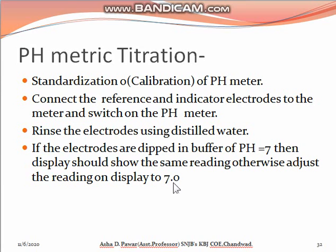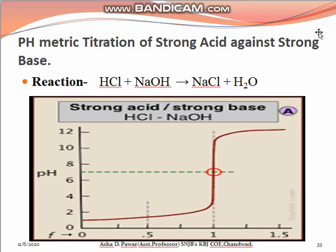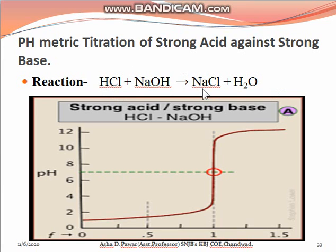Once we standardize the pH meter, we do not disturb the standardized knob and temperature knob. The second part of the titration is the titration between the strong acid and strong base. Replace the buffer solution with HCl solution. Fill the burette with a known concentration of NaOH and dip both the glass and calomel electrodes in the HCl solution. At the initial stage, HCl is a strong acid with a very high amount of H+ ions, and therefore the pH observed is very low, near about 1 or 1.5. We then start to add NaOH from the burette into the HCl solution, and the neutralization reaction takes place — HCl is converted into NaCl.